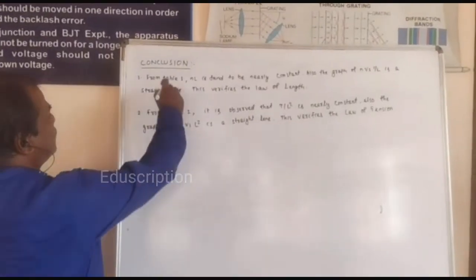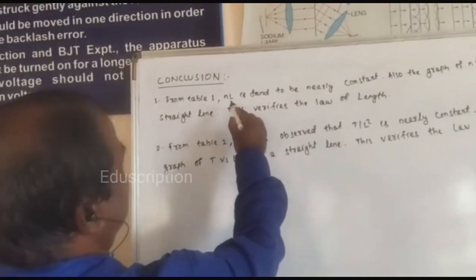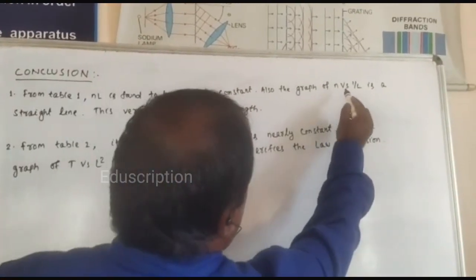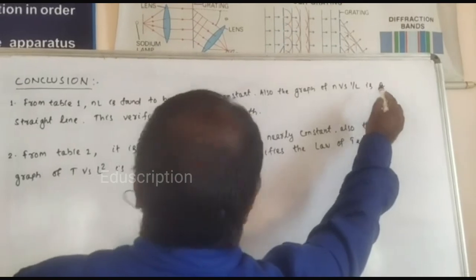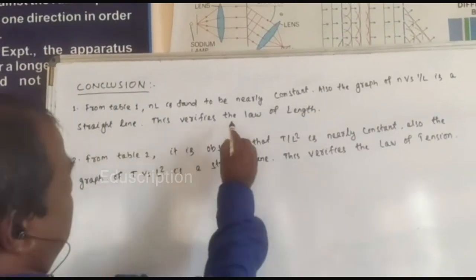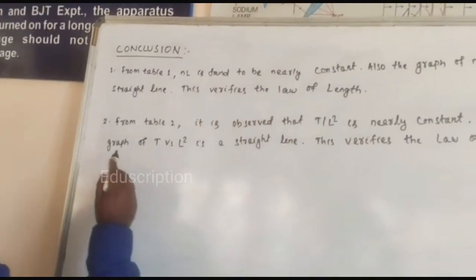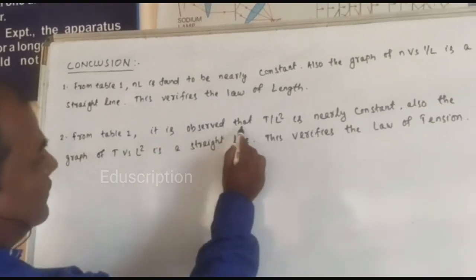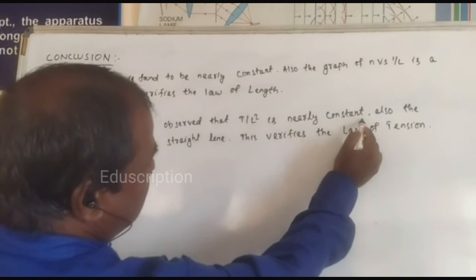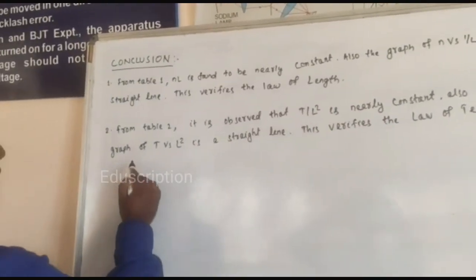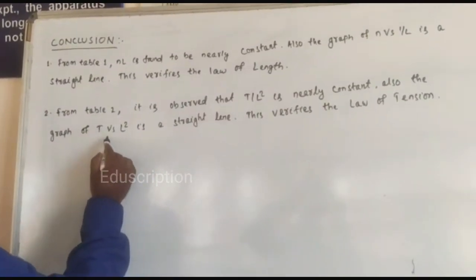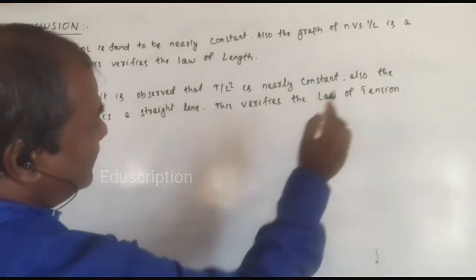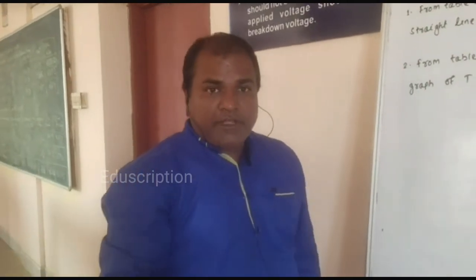See here conclusion. From table 1, n into L is found to be nearly constant. Also the graph of n versus 1 by L is a straight line. This verifies the law of length. And second, from table 2 it is observed that T by L square is nearly constant. Also the graph of T versus L square is a straight line. That means this verifies the law of tension. Thank you.